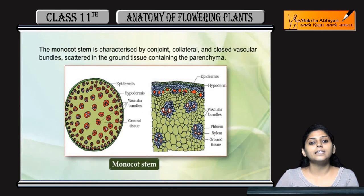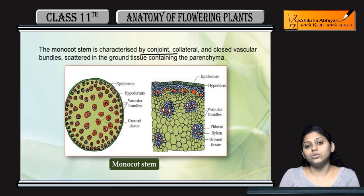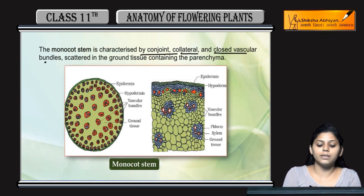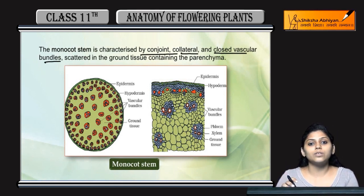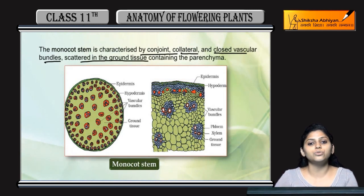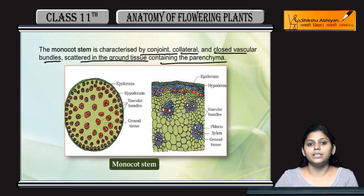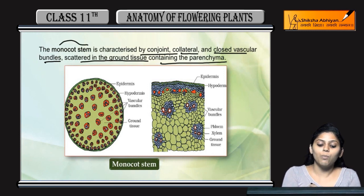But if the tissues have conjoint, collateral, and closed vascular bundles, and those vascular bundles are scattered in the ground tissue containing parenchyma, then it is a monocot stem.